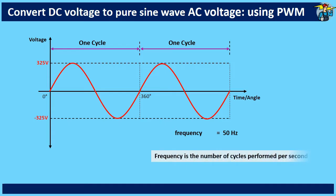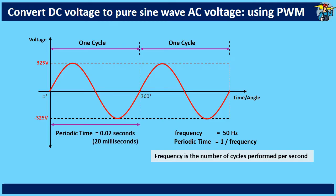Frequency is the number of cycles performed in 1 second. Periodic time is the time taken for 1 complete cycle to perform. To get the periodic time, divide 1 second by the supply frequency of 50 hertz. You get 20 milliseconds as the periodic time.